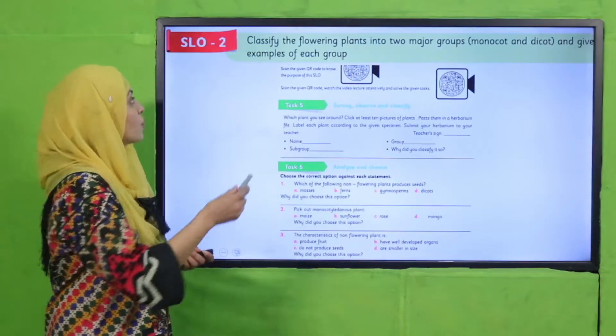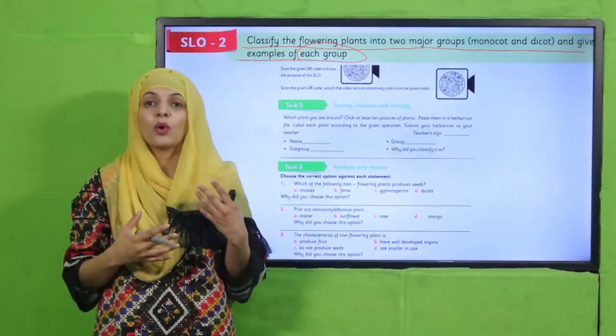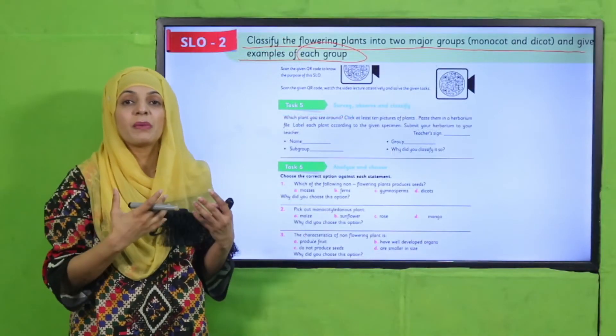According to SLO number two, students will be able to classify the flowering plants into two major groups — monocot and dicot — and give examples of each group.